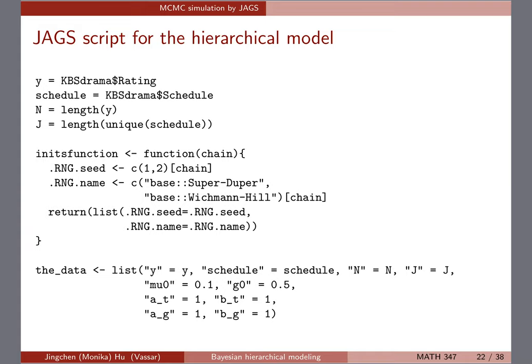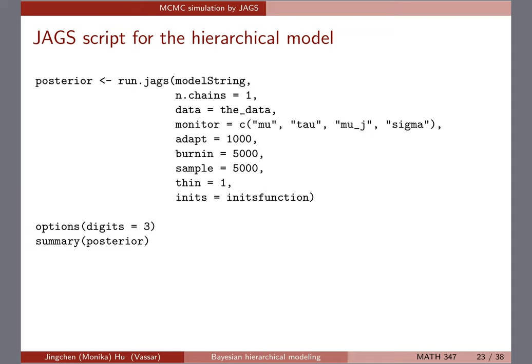Once you download the JAGS software you can run this code. It specifies the model string, number of chains — just one here — fits in the data, and the monitor argument lets you specify which parameters to monitor and return. You also set the adaptation period, burn-in period, sample period, and thinning — right now thinning is one so it's not really thinning at all. We're running a bit over time, so on Tuesday bring your laptop and we'll do more demo.